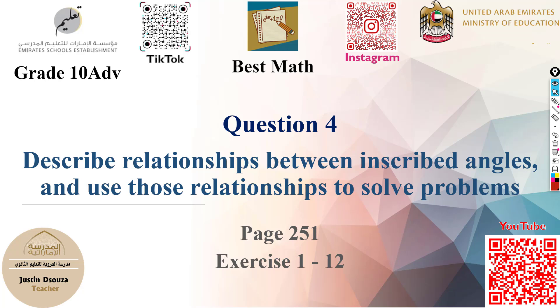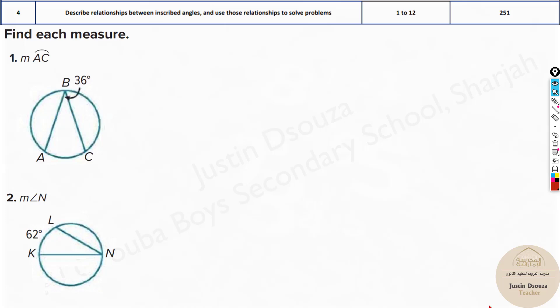Question 4 is relationships between inscribed angles. Here we have a set of different problems. The first type begins with a simple one: finding measure of arc AC.